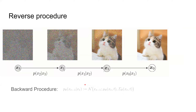In the reverse procedure, we parametrize X_T to produce X_{T-1}, which is the previous image. This can be written in Gaussian form where mu_theta represents the mean and sigma_theta represents the variance. We want to approximate the mean part rather than the sigma part, because the variance is already controlled by the variance schedule.